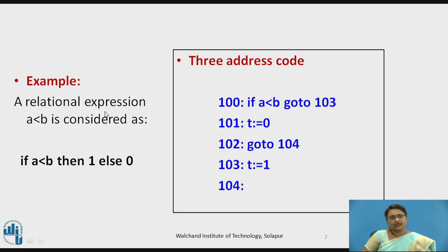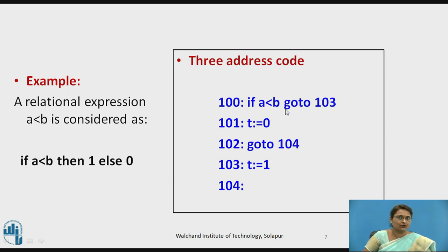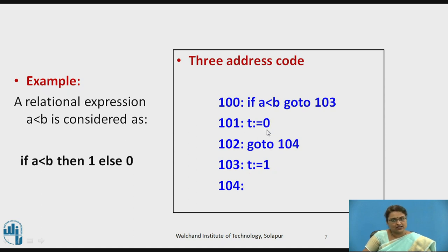Take another example: the simple expression A less than B. This is treated as: if A less than B, then take it as true (1), else take it as 0 (false) in the numerical representation. When converting to 3-address code for flow of control, starting at statement 100: if A less than B, go to 103. If true, T is assigned 1; otherwise T is assigned 0, and control goes to 104. This is how this expression is converted into 3-address code.